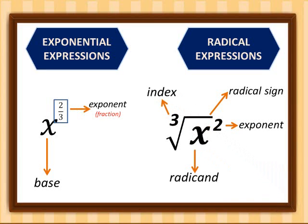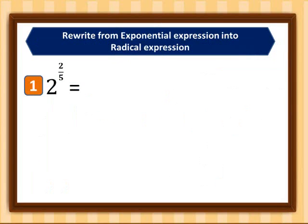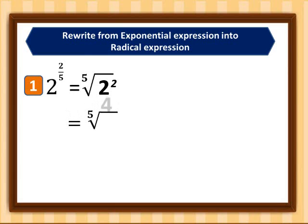For the first example: two raised to two-fifths. Our exponent is two-fifths, so the index is five (fifth root) and the radicand is two. The numerator two becomes the exponent of the radicand, giving us the fifth root of two squared, which simplifies to the fifth root of four.